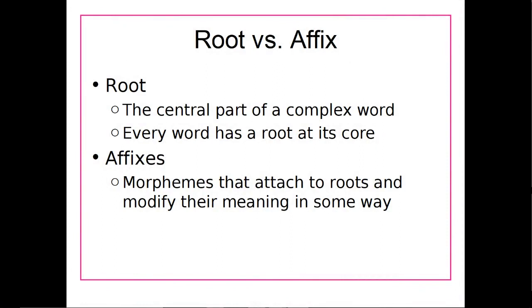That brings us into roots versus affixes. A root is going to be the central part of a word — if a word has multiple morphemes, the root is the part that all the other morphemes are attaching to. Every word has a root at its core. In the example from the previous lecture, we had unbelievable: believe would be the root, and un and able are morphemes attaching to the root and modifying its meaning. So un and able are affixes, and believe is a root.